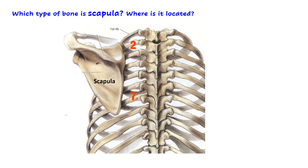During viva voce examination, when you pick up the scapula, the first question often asked is which type of bone is scapula and where exactly it is located. Scapula is a flat and irregular bone and it is located on the posterolateral surface of the chest wall, and its extent is from the second rib to the seventh rib.